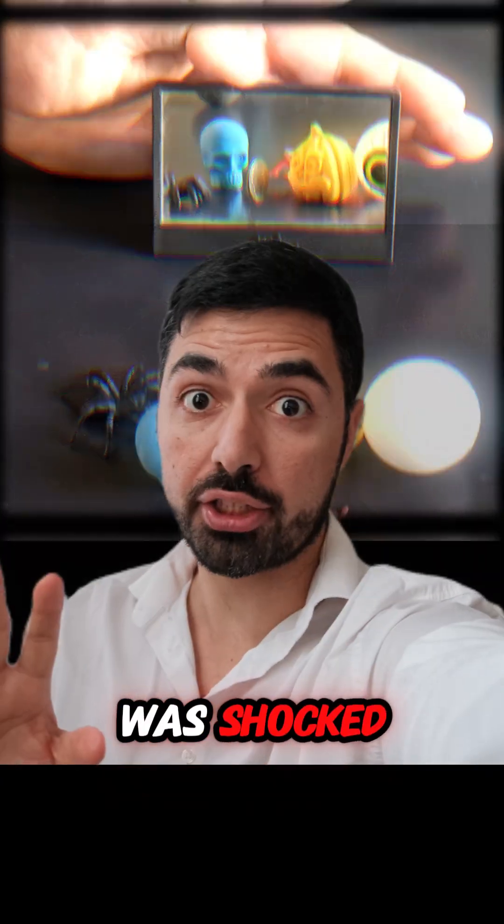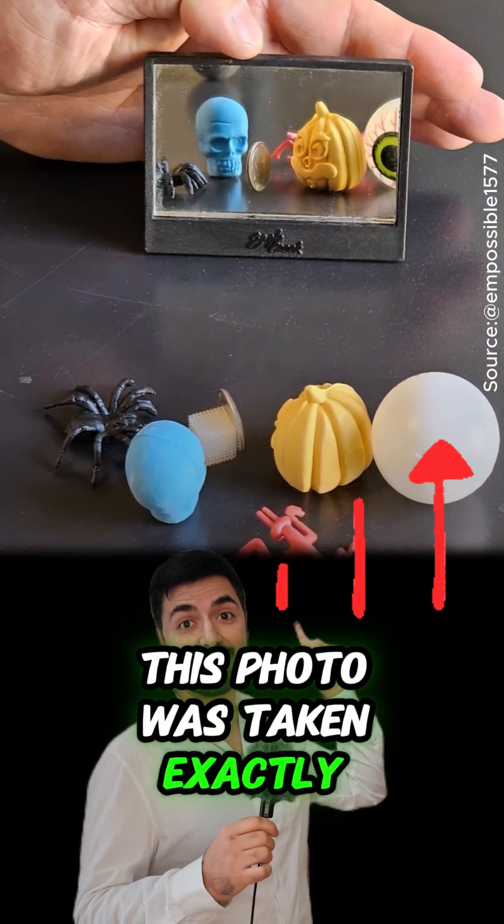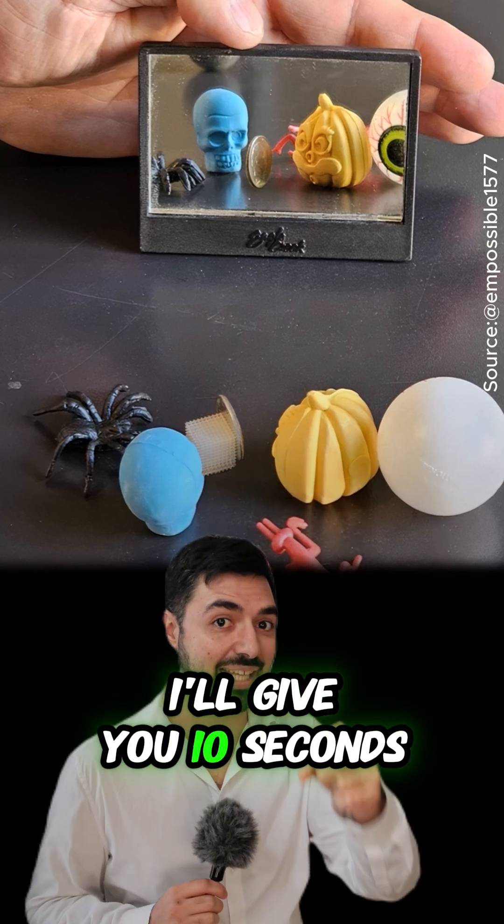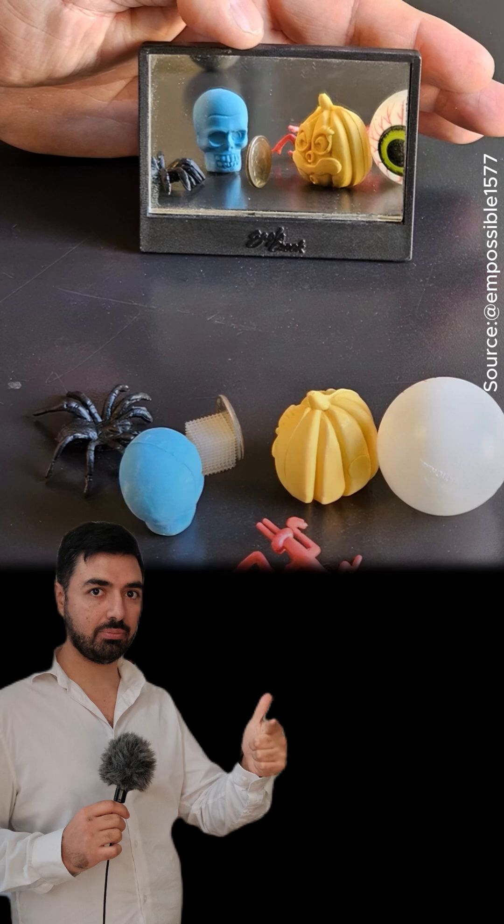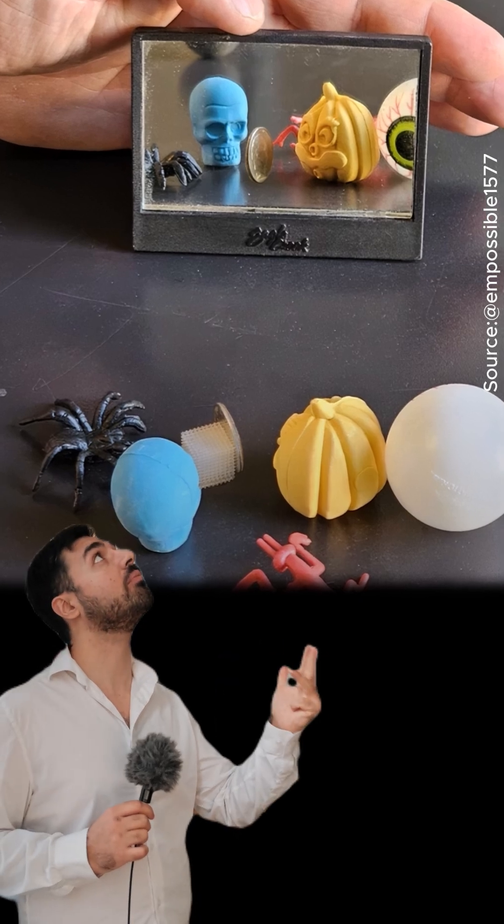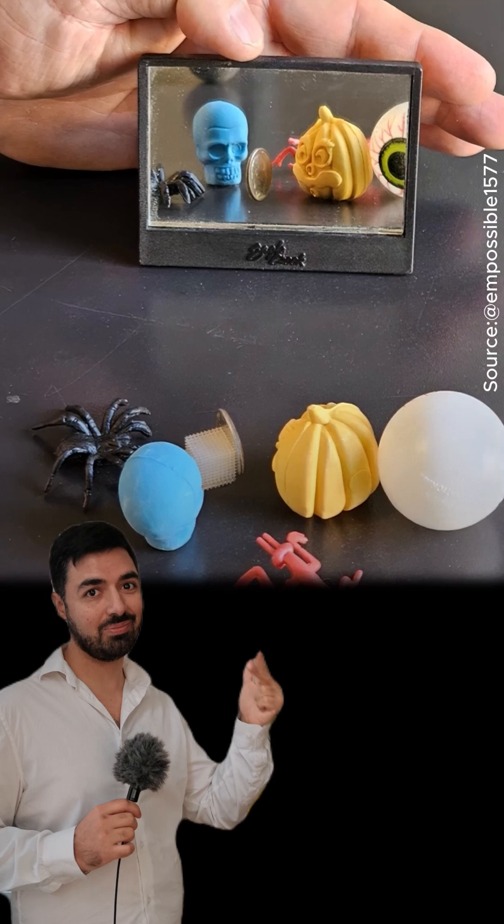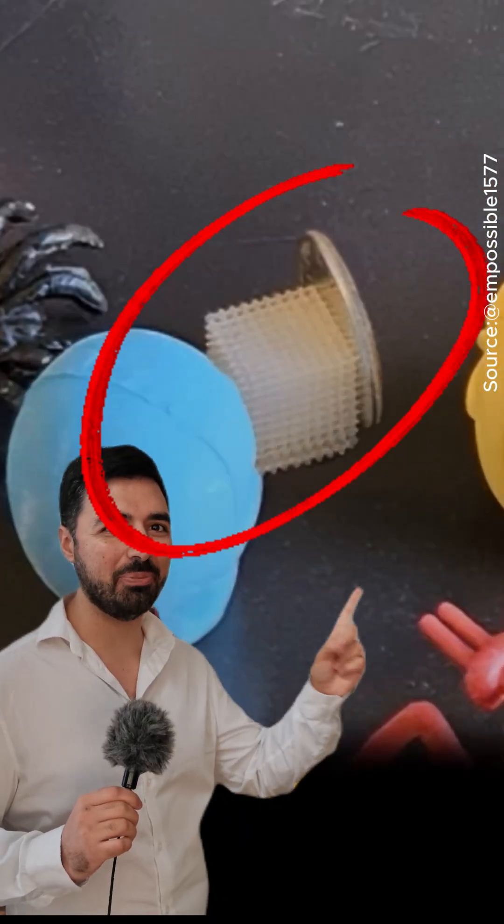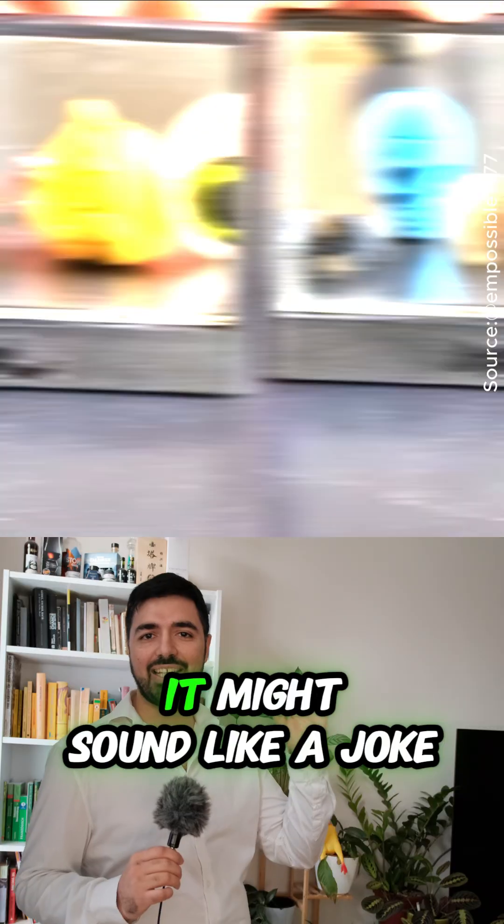When I found out, I was shocked. This photo was taken exactly as you see it, but don't you notice something strange? I'll give you 10 seconds. Three, two, one. Yes, the reflection of this white cube is missing, but how is that possible?